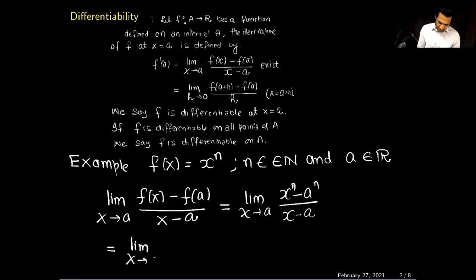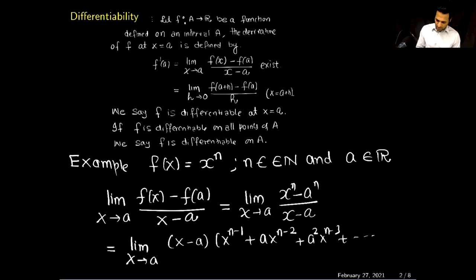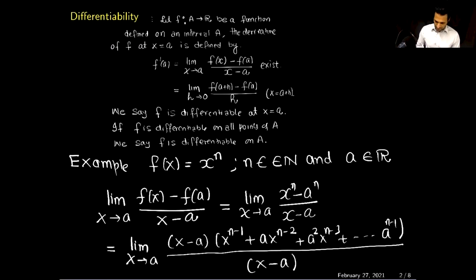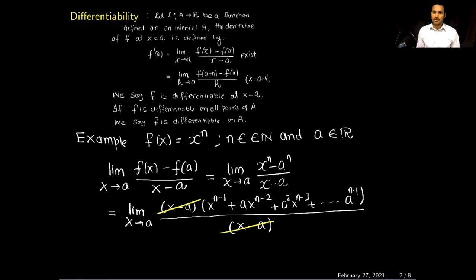Using the binomial theorem I can factor the numerator, and after factoring I will get the limit as x approaches a of: (x minus a) times (x^(n-1) + a·x^(n-2) + a²·x^(n-3) + ... + a^(n-1)) all divided by x minus a. In the next step we cancel out (x minus a) from the numerator and denominator.